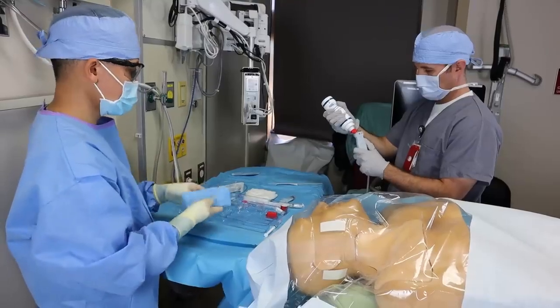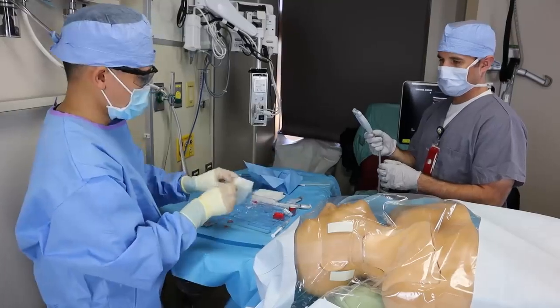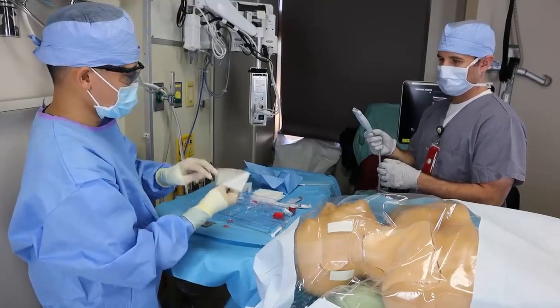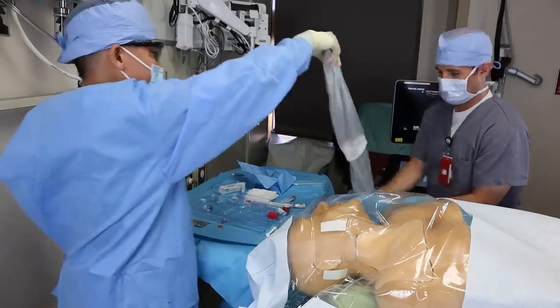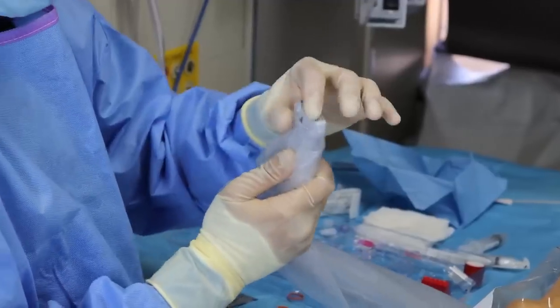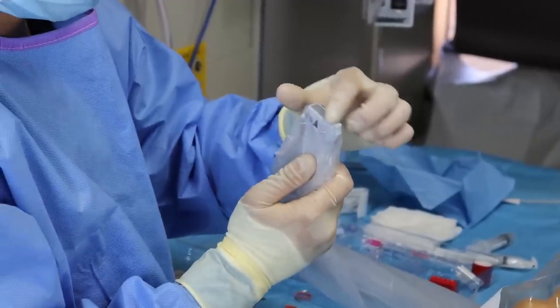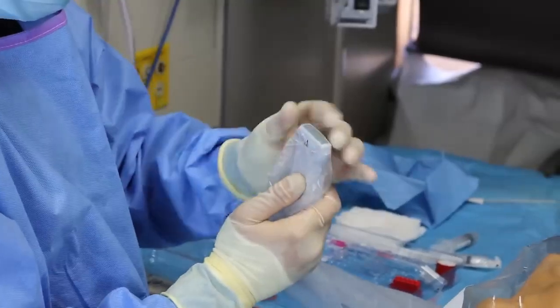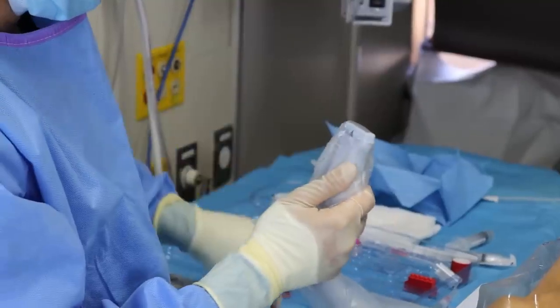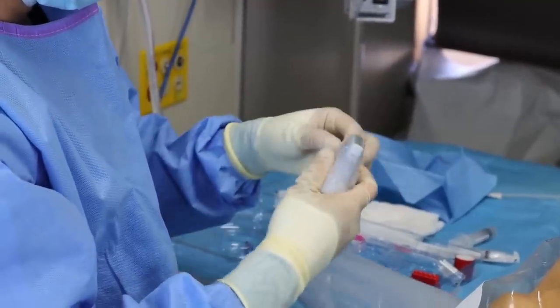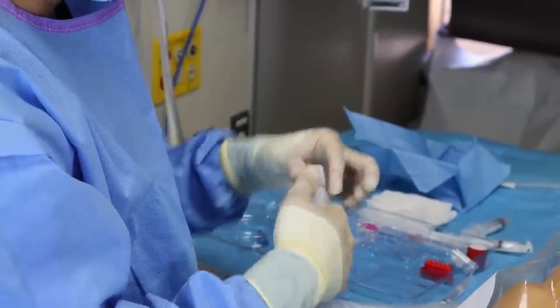Have your assistant put gel on the tip of the ultrasound probe while you ready the probe cover. Put your hand through the poochy tip of the probe cover and then reach out and grab the probe. Use your fingers to snug the probe cover up against the probe, removing any folds in the plastic. You also want to massage any air bubbles in the gel away from the tip of the probe. Remember, air is the nemesis of ultrasound. Then apply the rubber bands to secure the cover.